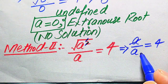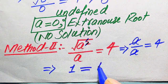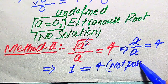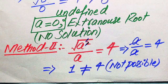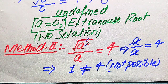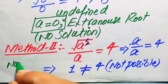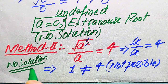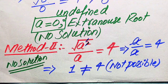The a cancels with a, giving us 1 = 4 on the left-hand side. Since 1 = 4 is not a possible case — in general, 1 is not equal to 4 — we cannot get any value of a that satisfies the given equation. Therefore, we finally conclude that this equation has no solution. Thank you so much for watching; please subscribe to my channel for more videos.